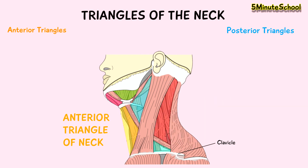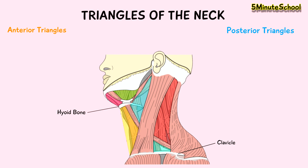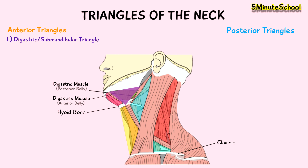Let's look at what's within the anterior triangle first, because it contains another four triangles. Here we have the hyoid bone, and attached onto the hyoid bone are two muscles: the anterior belly of the digastric muscle and the posterior belly of the digastric muscle. Here is the first triangle already formed — it's called the digastric triangle, also known as the submandibular triangle. That's the first triangle within the anterior triangle of the neck.